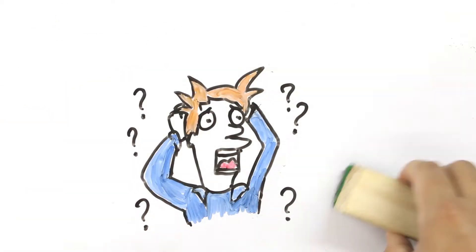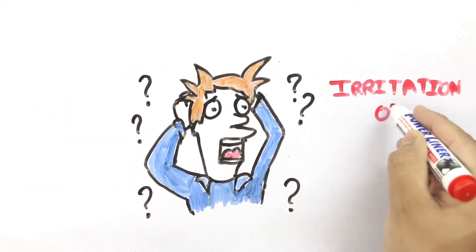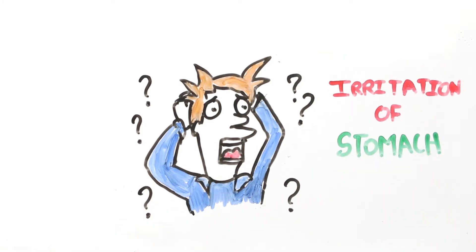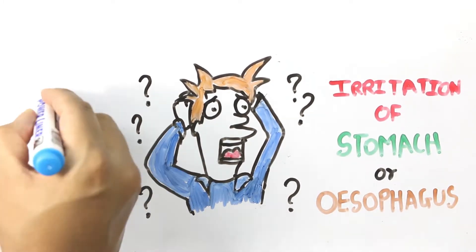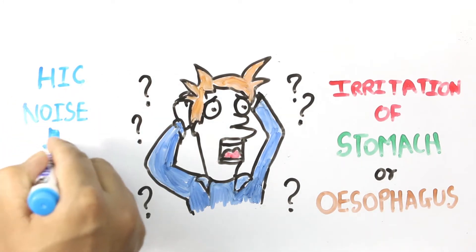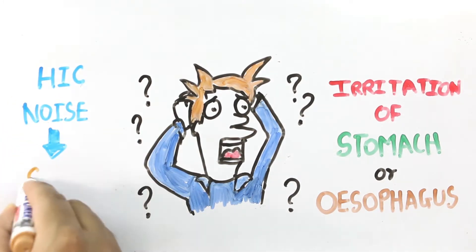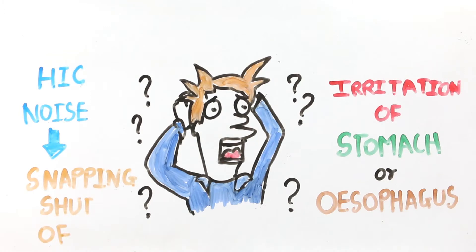There are over 100 causes for hiccups, but the most common is irritation of the stomach or the esophagus, the food tube that leads to it. The hic noise comes when the breath is cut off by the snapping shut of your glottis, which is like a fleshy lid or trapdoor that separates the food and air tubes in your throat.